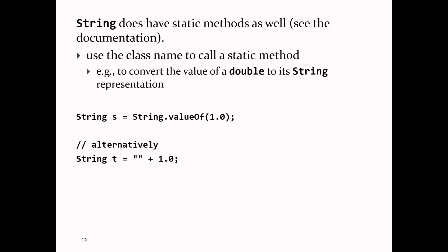String does have static methods as well. You always use the name of the class to call static methods. valueOf is used to give you the string representation of a primitive type value — you can call valueOf on any of the primitive types and get back the string representation. Alternatively, you can just concatenate the empty string with the value, which effectively does the same thing.